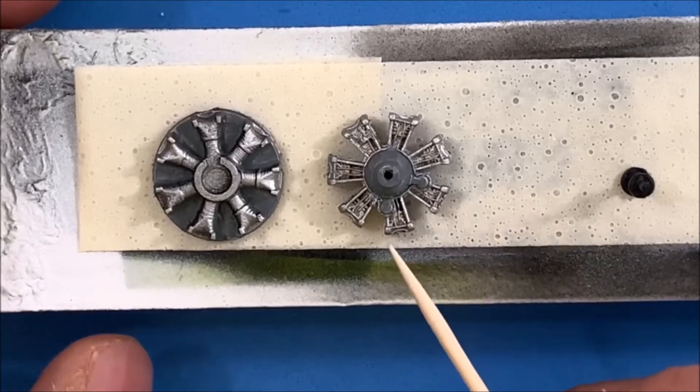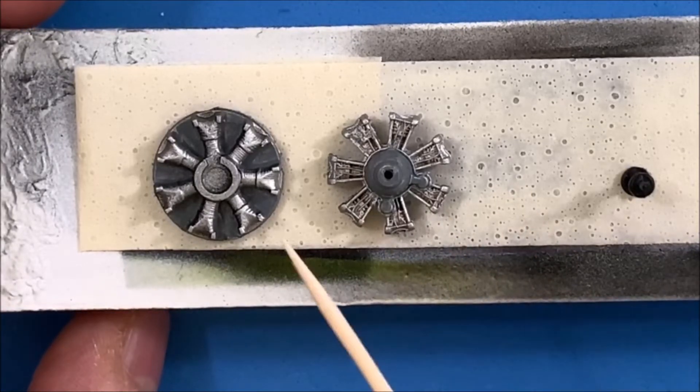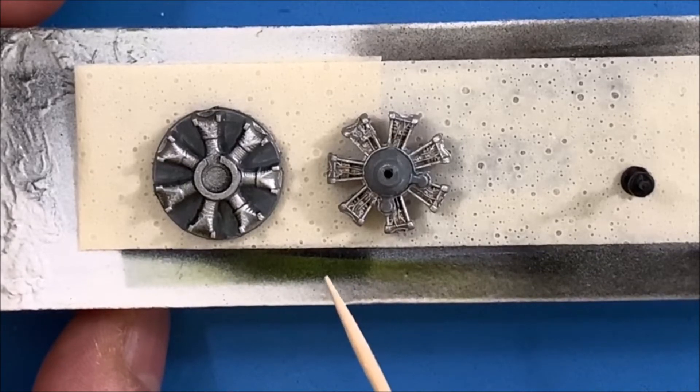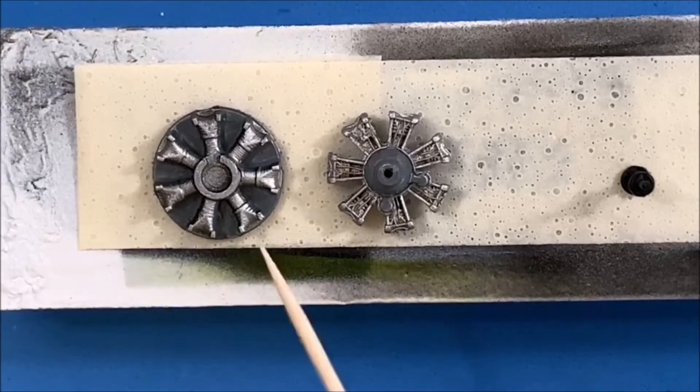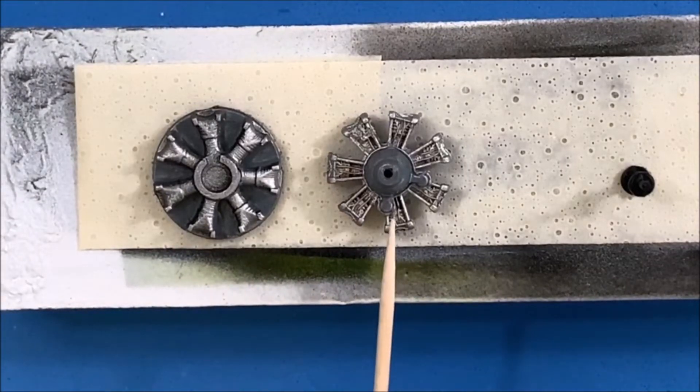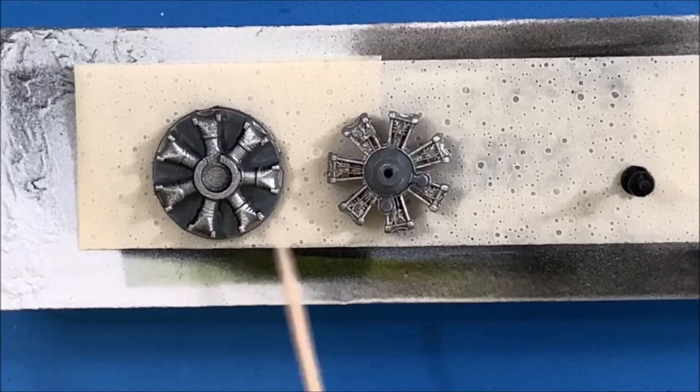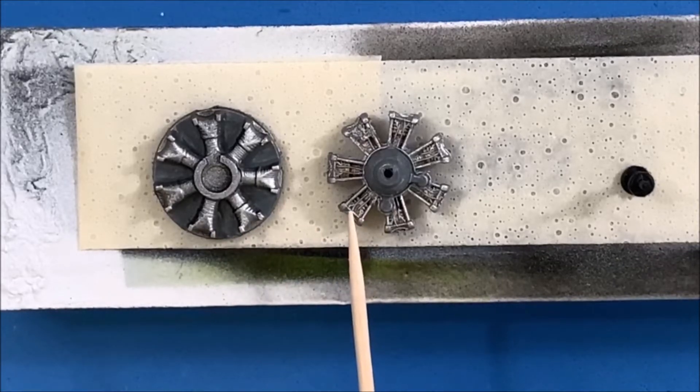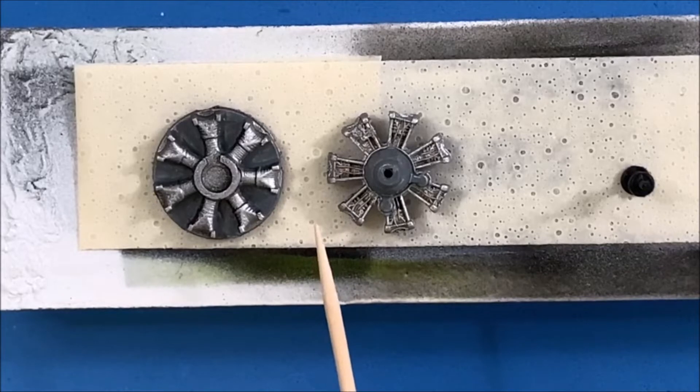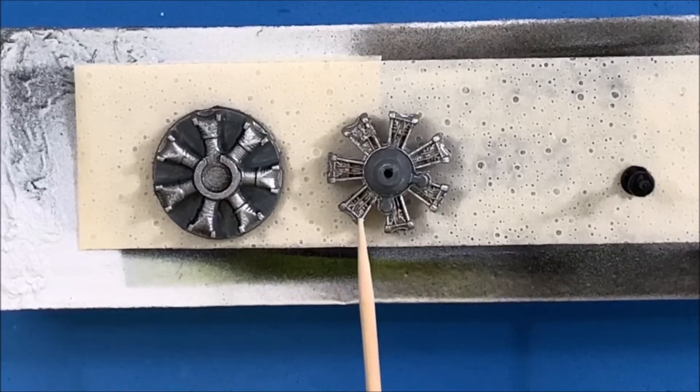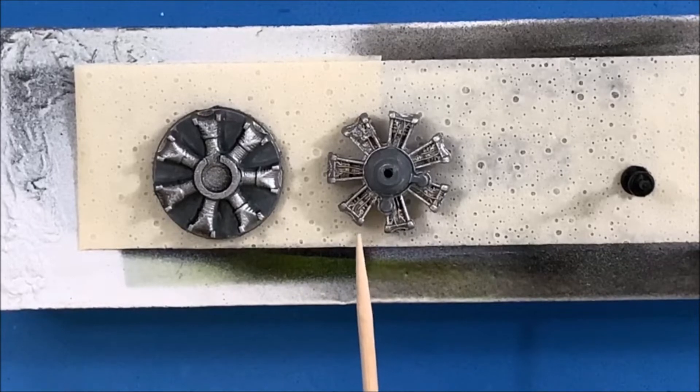The way that I typically do engines are as follows. I take both pieces off the sprue, I clean them up and then I put a black primer over them. I use Vallejo black primer and then once the primer's on I spray everything with flat aluminum. You could use whatever type of steel aluminum color but I think flat aluminum gives a nice look to it.